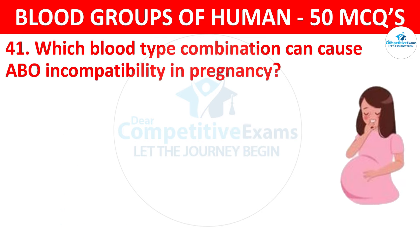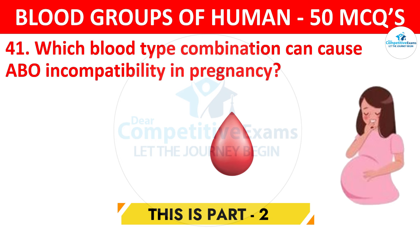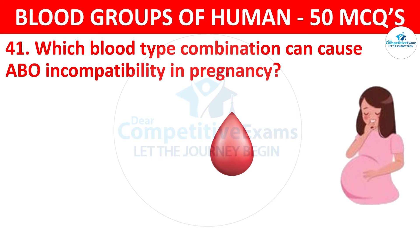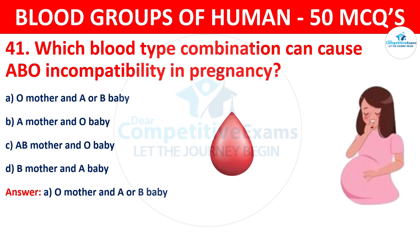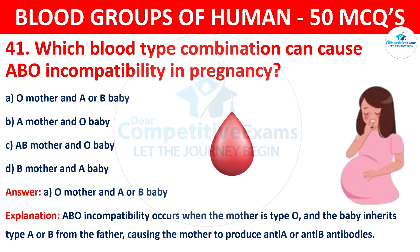Question 41: Which blood type combination can cause ABO incompatibility in pregnancy? The correct answer is A, O mother and A or B baby. ABO incompatibility occurs when the mother is type O and the baby inherits type A or B from the father, causing the mother to produce anti-A or anti-B antibodies.